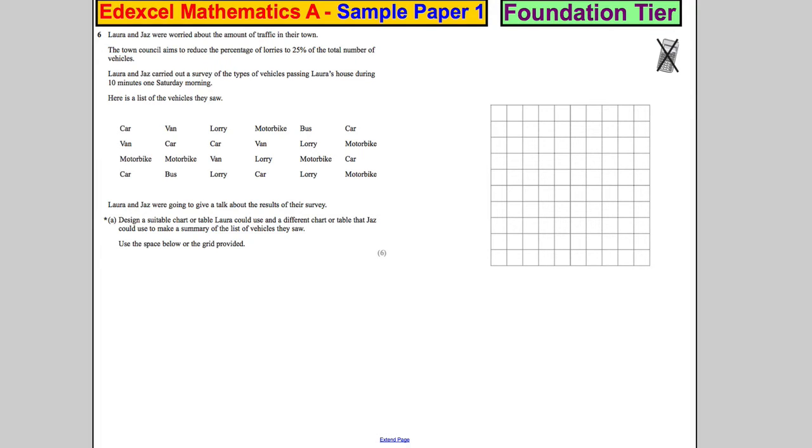Laura and Jazz were worried about the amount of traffic in their town. The town council's aim is to reduce the percentage of lorries to 25% of the total number of vehicles. So that's like, say if you had 100 vehicles in your town, you would only want 25 lorries. So Laura and Jazz carried out a survey of the types of vehicles passing Laura's house during 10 minutes on one Saturday morning. Here is what they saw.